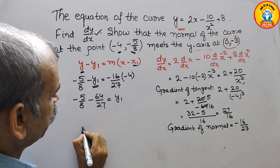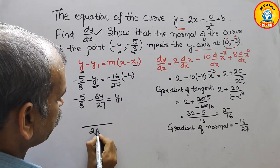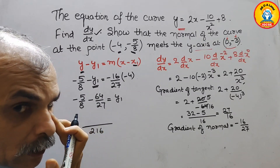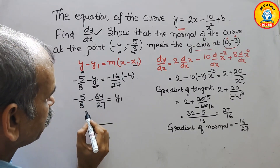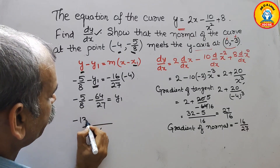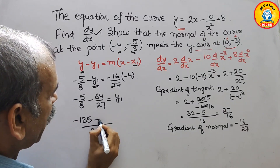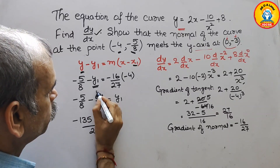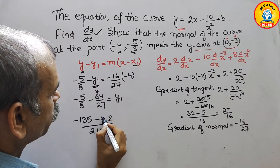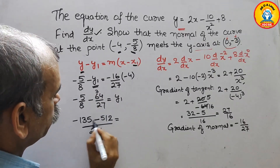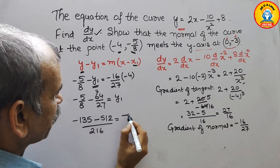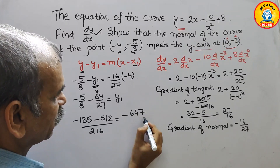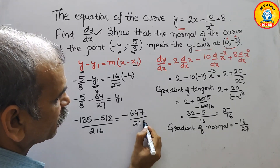So, 8 into 27 is 216. Now multiply: we will get minus 135, then multiply again to get 512. That is equal to minus 647, divided by 216.